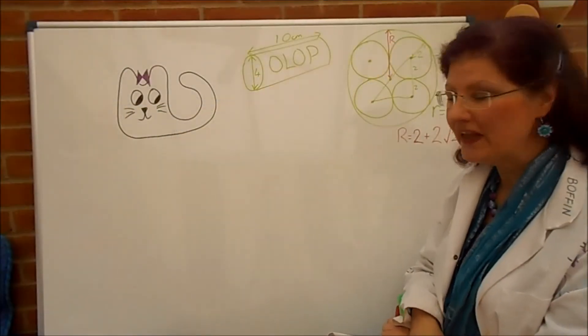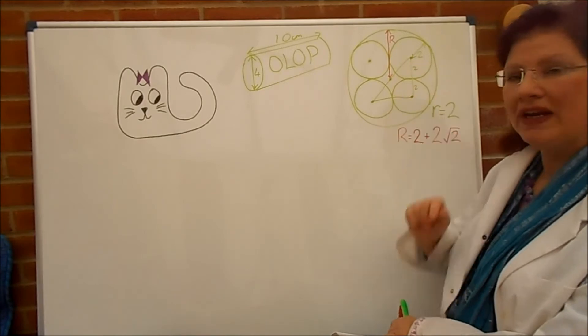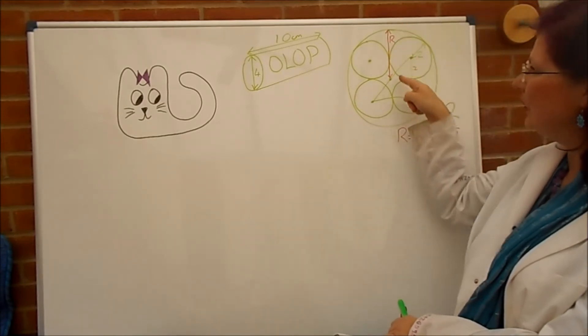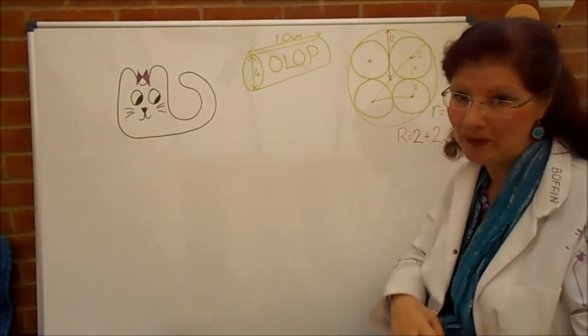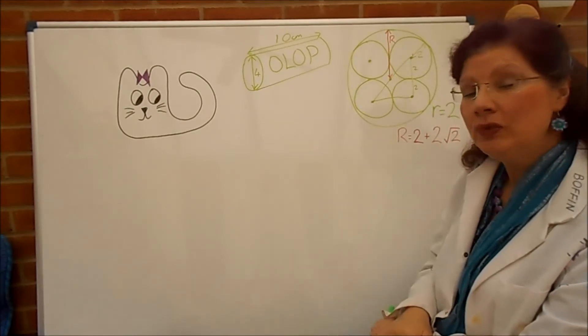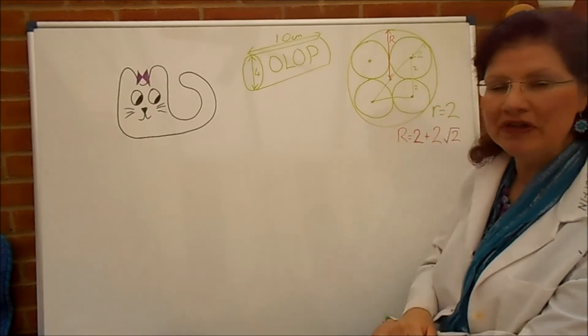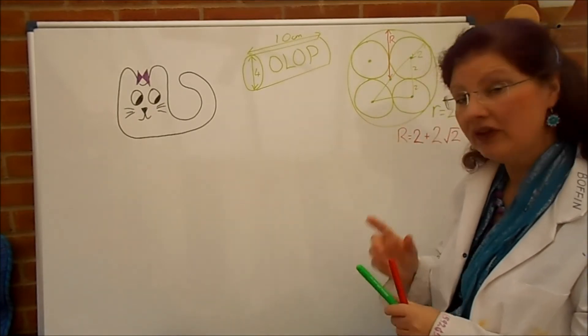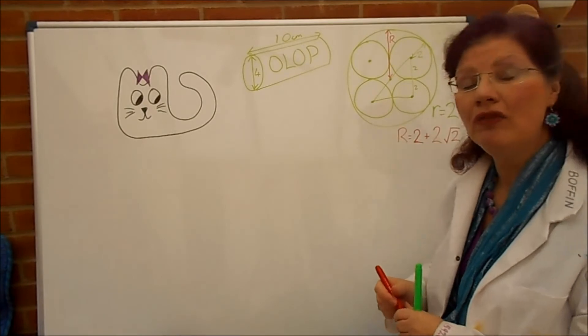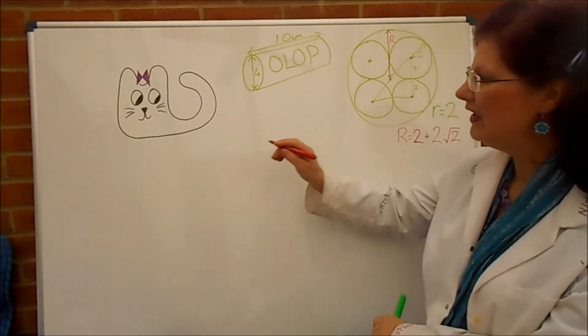Right, to help us work that out I've written in green the radius of the small tube of Olops and in red the radius of the big cardboard tube that we worked out in part A. So, to work out the missing volume what we're going to do is work out what the wasted area is in the cross section then multiply it by its length. So, we're going to start off by working out the area of the large cardboard tube.